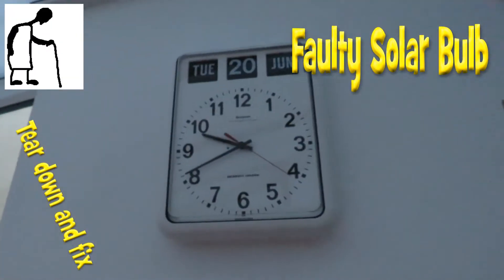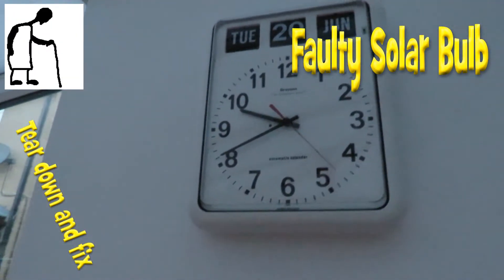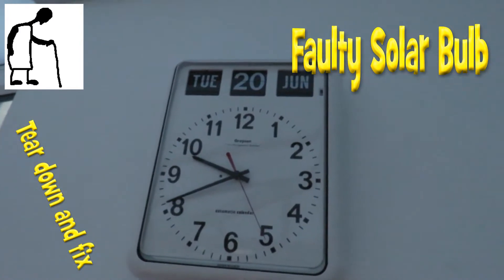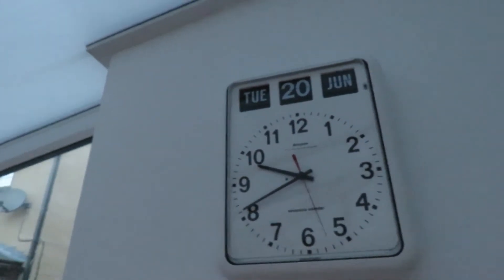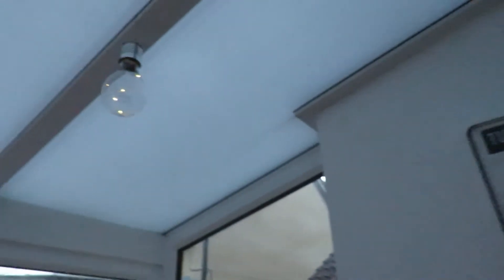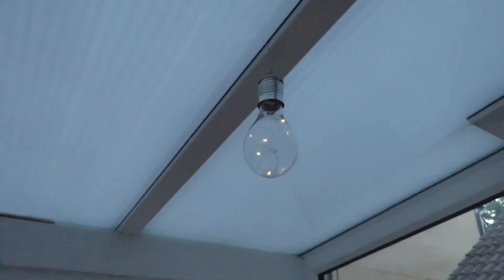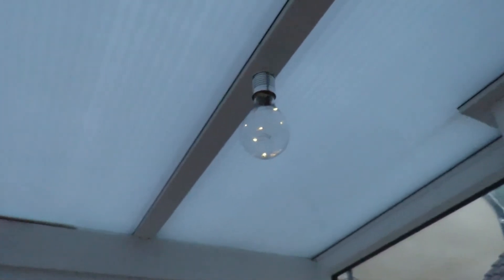Hi guys. It's about 20 to 10 at night, Tuesday the 20th of June. We're in my conservatory just looking at my solar light bulbs. These come from Poundland. They're nicely alight.